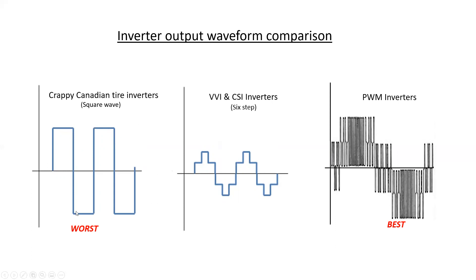VVI and CSI inverters are referred to as six-step because the voltage applied out of the inverter is in six steps — one through six — going down on the negative and up on the positive alternations. PWM is actually the best AC sine wave generated by an inverter, though it looks a little bizarre, and we'll take a few moments to investigate further what exactly is happening with it.